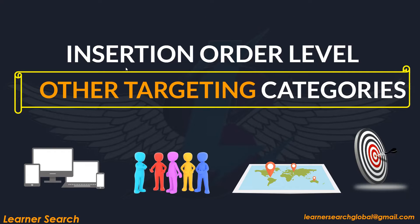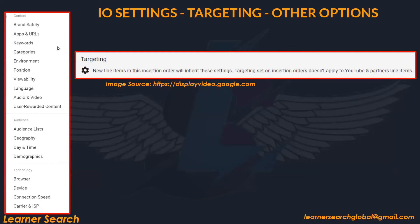At IO level, all targeting categories are available: content, audience, and technology. Under content, all these options are available: brand safety, apps and URLs, keywords, categories, environment, position, viewability, language, audio, video, and user-generated content. New line items in this IO will inherit these settings, but targeting set on IO doesn't apply to YouTube.